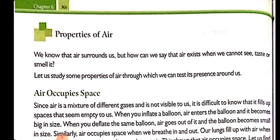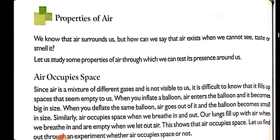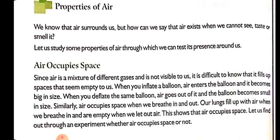The first property is: air occupies space. How can we say that air occupies space? You all know that air is a mixture of different gases — we read in the previous video that there are so many gases present in the air: oxygen, nitrogen, carbon dioxide, water vapors, dust particles. There are so many gases, but air is not visible to us. So then how can we say that air occupies space?